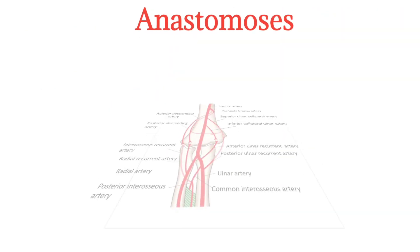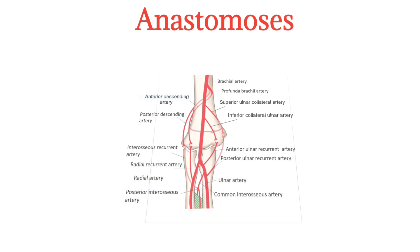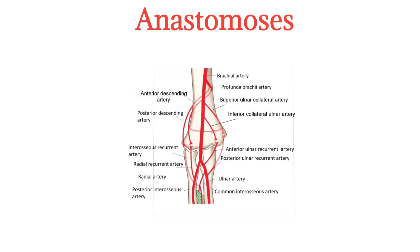Anastomosis around the elbow joint. Anastomoses link the brachial artery with the upper ends of the radial and ulnar arteries. They supply the ligaments and bones of the joint. The anastomoses can be subdivided into the following parts.